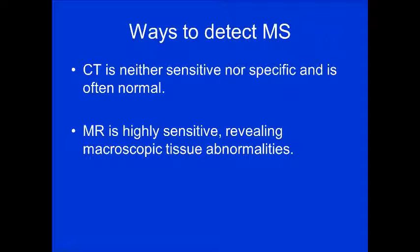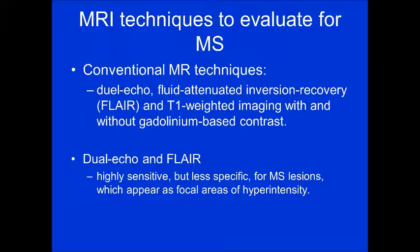How do we detect multiple sclerosis? Clinically, patients may present to a primary care physician, neurologist, or ER where a CT may be ordered — but CT is neither sensitive nor specific; 99 times out of 100 it's normal. The study of choice is MRI, which is highly sensitive and reveals macroscopic tissue abnormalities. The conventional MR techniques we use are dual echo, fluid attenuated inversion recovery — better known as FLAIR — and T1-weighted imaging with and without contrast.